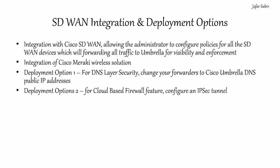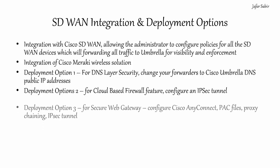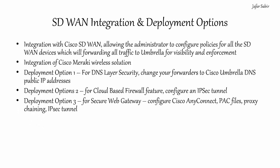For the Cloud Delivered Firewall, you would configure an IPsec tunnel from any device within the organization to Umbrella for the firewall to process traffic. If you are utilizing the Secure Web Gateway, there are four methods: you can use the Cisco AnyConnect client software, which is commonly used for remote access VPN connectivity; a PAC file; proxy chaining; or an IPsec tunnel, just like the cloud delivered firewall.